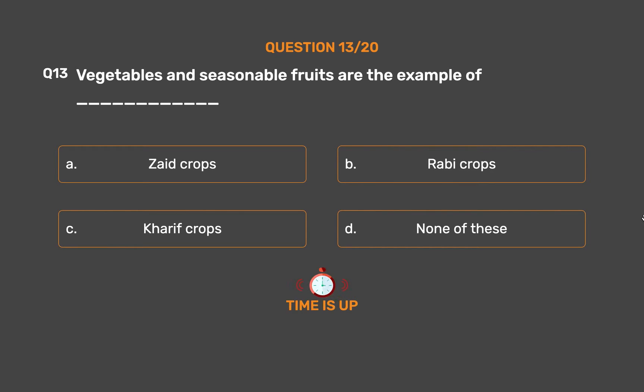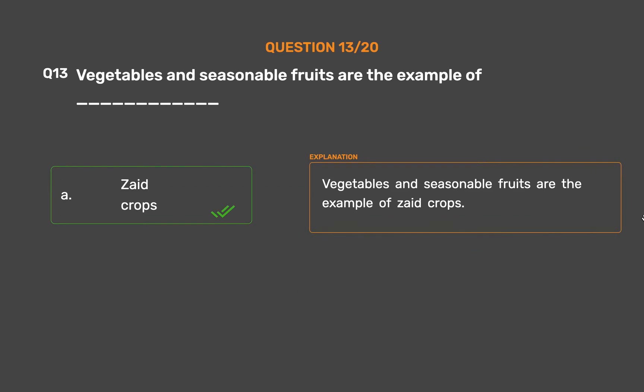The correct answer is Option A: Zaid crops. Vegetables and seasonal fruits are examples of Zaid crops.